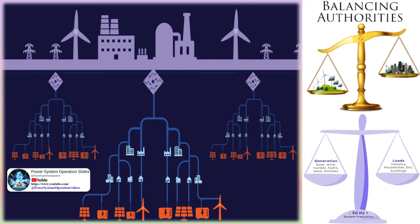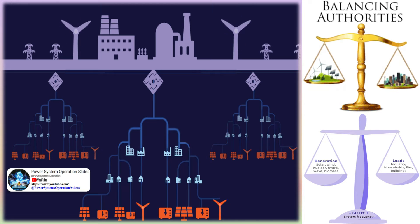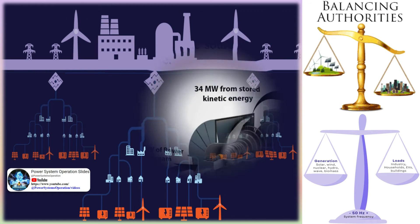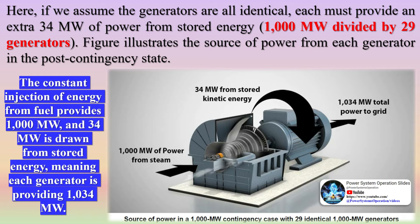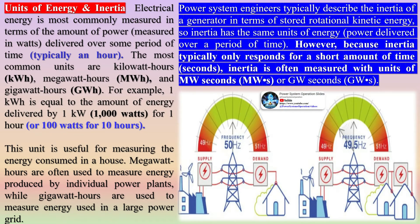A generator with one GWs of inertia can deliver one gigawatt of power for one second from its stored energy. One GWs is equal to 0.27 MWh or 278 kWh. As each generator uses up its inertia, it slows down. The relationship between rotational speed and energy allows us to calculate how much each generator will slow down and the corresponding decline in frequency. The total system starts at 60 Hz with 115 GWs of stored energy, and the load extracts about 1 GWs after one second, resulting in a frequency of about 59.7 Hz.